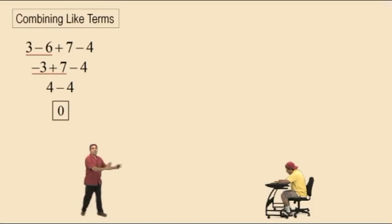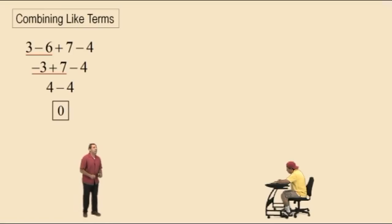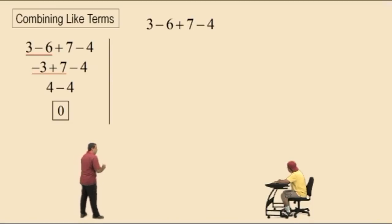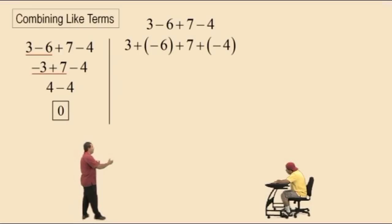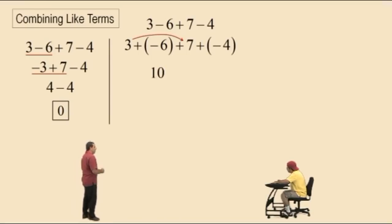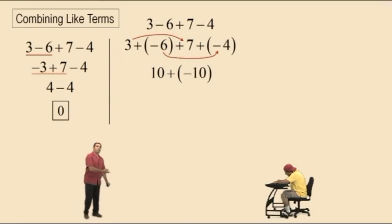Now if everything had been added together, then we could use the commutative property of addition to change the order of everything and therefore add in any order we want. So what we're going to do today is change all of our subtractions to adding negative numbers. Here's the same problem: 3 subtract 6 plus 7 subtract 4, rewritten as 3 plus negative 6 plus 7 plus negative 4. Everything is being added so we can go in any order. We add the positives: 3 plus 7 is 10. Then the negatives: negative 6 plus negative 4 is negative 10. And 10 plus negative 10 is the same as 10 subtract 10, which is 0.